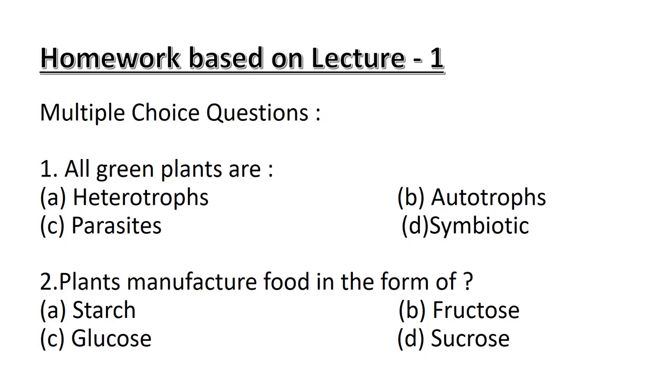Question number 2: Plants manufacture food in the form of. Option A: Starch. Option B: Fructose. Option C: Glucose. Option D: Sucrose.